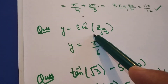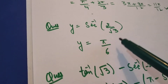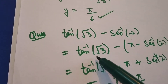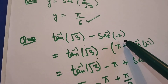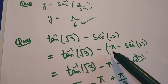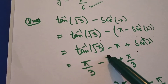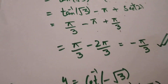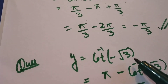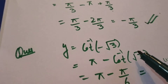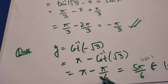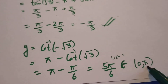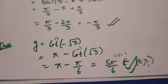Similarly, for y = sec⁻¹(2/√3), the value of sec⁻¹(2/√3) is π/6. Next, tan⁻¹(√3) − sec⁻¹(−2): tan⁻¹(√3) remains as is. sec⁻¹(−x) = π − sec⁻¹(x), so this becomes tan⁻¹(√3) − (π − sec⁻¹(2)) = π/3 − π + π/3 = −π/3. For y = cot⁻¹(−√3): using cot⁻¹(−x) = π − cot⁻¹(x), this gives π − cot⁻¹(√3) = π − π/6 = 5π/6. Since 5π/6 means 150 degrees, and the range of cot⁻¹ is (0, π) — i.e., 0 to 180 degrees — 150 degrees lies in this range, so our answer is correct.